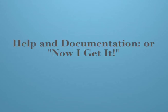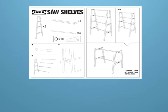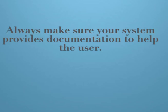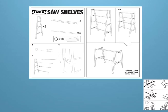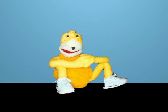Help and documentation — or now I get it. This principle states that even though the system can be used without documentation, it may be necessary to provide help and documentation. If we look at Ikea merchandise, in many instances we can assemble what we purchase without much difficulty, but there is always documentation in case we need help. Always make sure that your system has appropriate documentation to help the user.